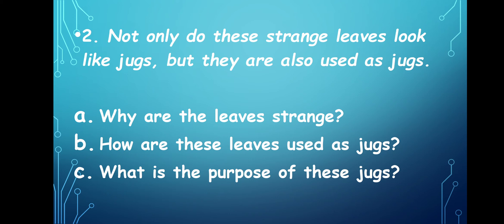How are these leaves used as jugs? These leaves — that is, these jugs — have water in them. If a traveler is very thirsty and cannot find any water, and he finds a pitcher plant, he can be sure there is at least some water so that he can quench his thirst. These pitcher plant leaves can be used as a jug because they contain water.